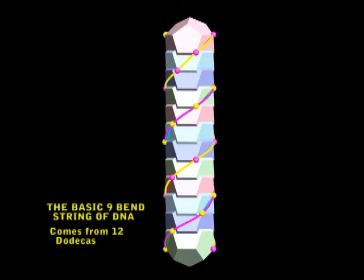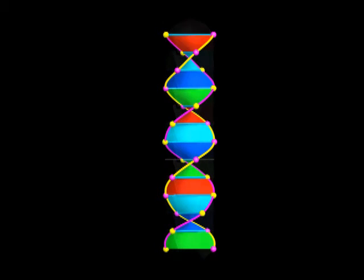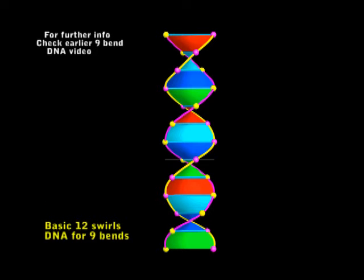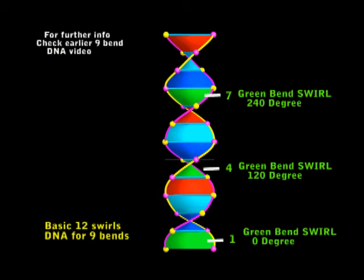In my earlier video, the 9 bends of DNA, I showed 12 dodecas. This gives us the basic bank of DNA swirls. Which was 3 green bend swirls at 120 degrees to each other. And 3 blue swirls that was 120 degrees.